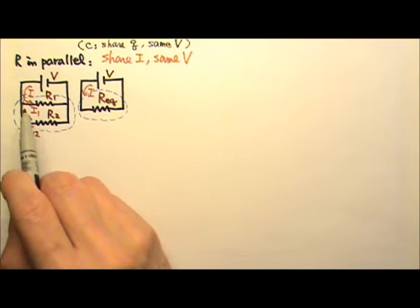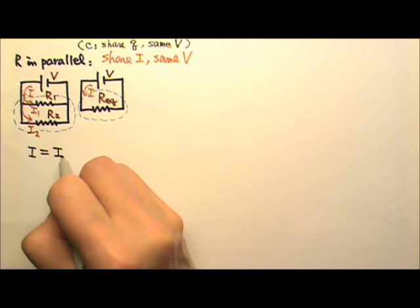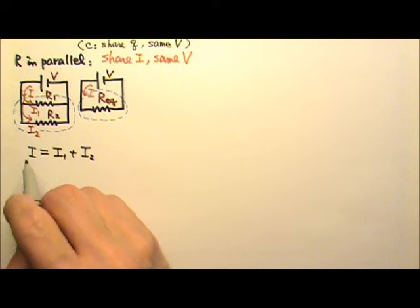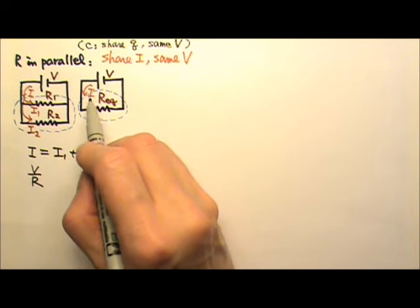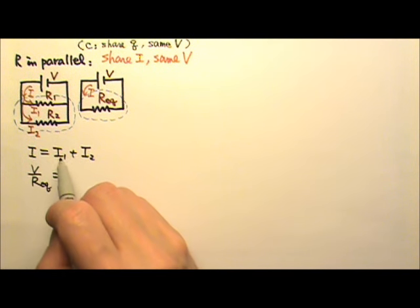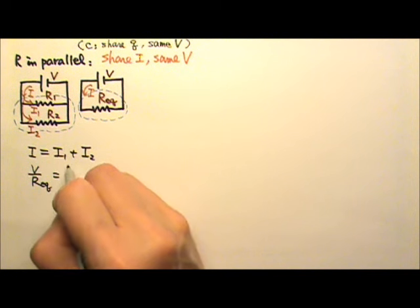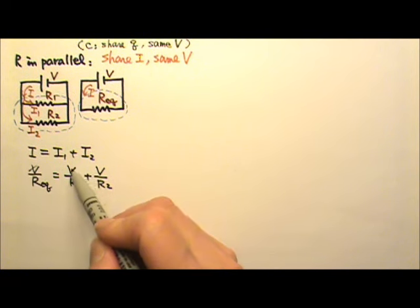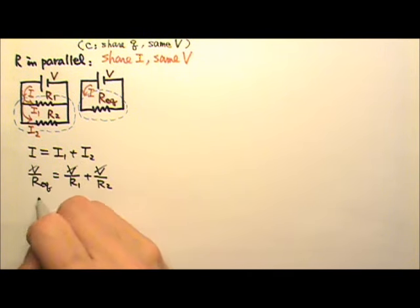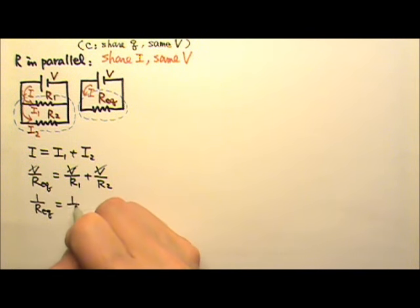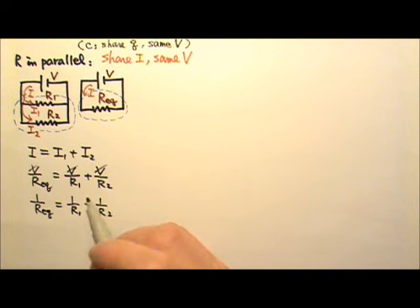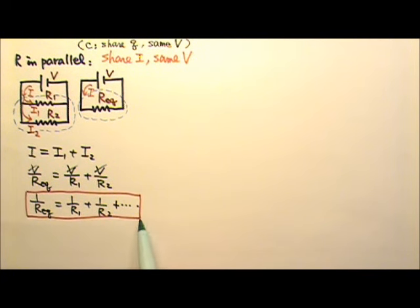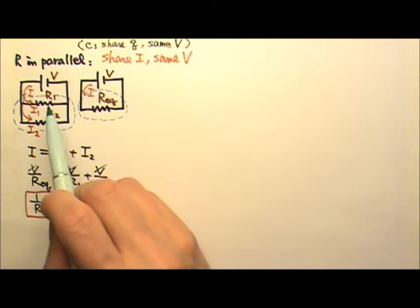Because the two resistors have to share the current, that means I equals I1 plus I2. And since V equals IR — Ohm's law — that means I equals V over R. This current is V divided by the equivalent resistance, I1 equals V divided by R1, and I2 is V divided by R2. Because they all have the same voltage, we cancel the Vs, and we get 1 over the equivalent resistance equals 1 over R1 plus 1 over R2. If there are more than two resistors in parallel, we just keep on adding them. This is the equation for finding equivalent resistance for resistors in parallel.